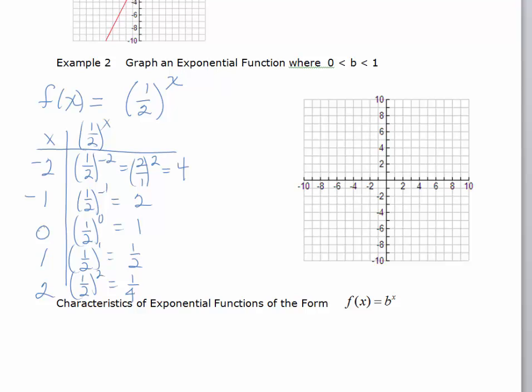And so, we'll plot these points. So, we're going to say, at negative 2, we've got a value of 4. At negative 1, we've got a value of 2. At 0, we have a value of 1. At 1, we're at 1 half. At 2, we're at 1 quarter.